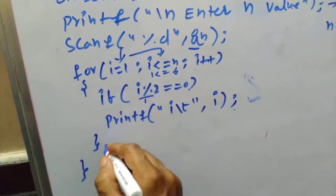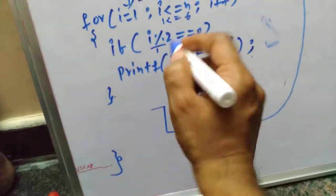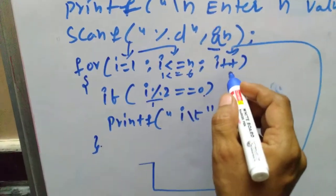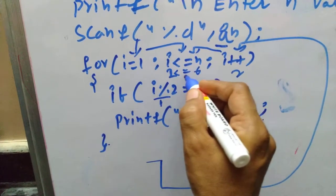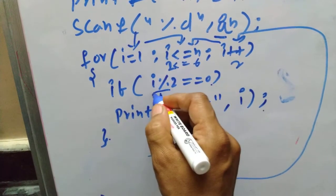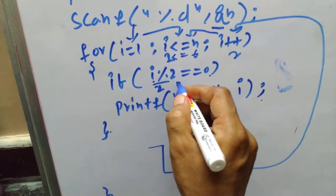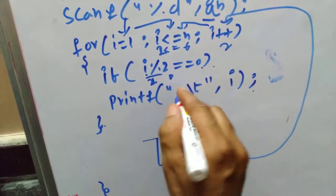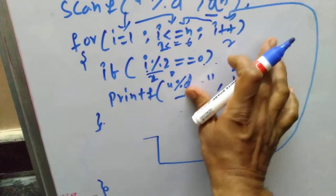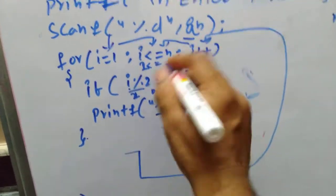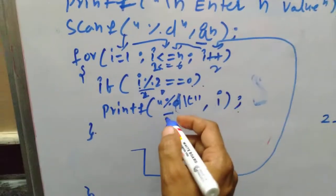After that last statement, it goes to the increment step and i becomes 2. It checks 2 <= 6 — condition is true. Here, 2 % 2 gives remainder 0, and 0 == 0 is true, so the condition is true and it prints the integer value of i. It prints 2 on the output screen, followed by a tab space.